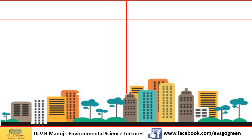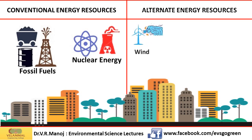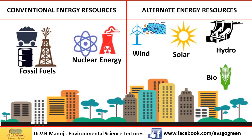On the one hand we have our conventional energy resources, which mainly include fossil fuels — coal and crude oil — from which we get fuel for our internal combustion engines and machinery, and more recently we have nuclear energy. On the other hand, we have unconventional or alternate energy resources which are rapidly developing. They include wind, solar, hydroelectricity, and bioenergy. We shall see each of these in detail in the next series of lectures.